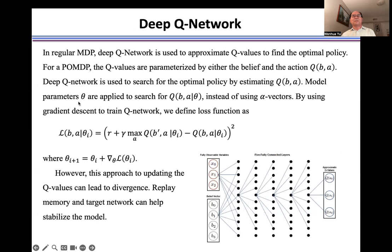Another general solution is using the deep Q-network. We use Q at the belief and action to approximate the true Q-value from the observed state. Using deep Q-learning, we introduce network parameters θ. Instead of adjusting alpha vectors, we adjust the model parameters.